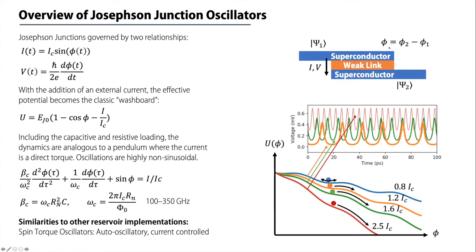Josephson junctions, which are formed by two superconductors bridging a weak link, are most typically characterized in terms of the phase difference of the superconducting wave functions phi. The current and voltage across these are given by the Josephson relations. This is the source of this high non-linearity. Now, the introduction of an external bias current does something interesting. It basically tilts the potential of the system into a washboard.